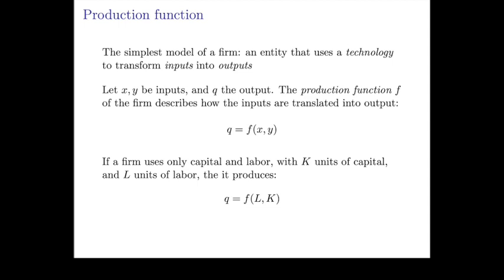So let's suppose a firm uses only labor and capital, then we would write it like this. If you use l units of labor and k units of capital, then the output of the firm is going to be the quantity q, which is f of l,k. We call f the production function of the firm.